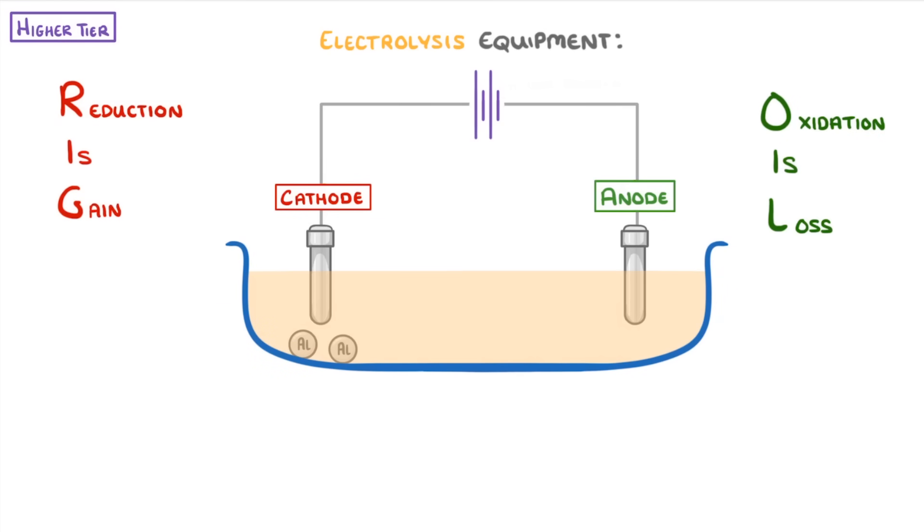In addition to these half equations, we can also write the overall equation for the electrolysis reaction. We start with aluminium oxide in liquid form, and we know this goes to form aluminium, also a liquid, and oxygen as a gas. So, all we need to do is balance it, and it will look like this.